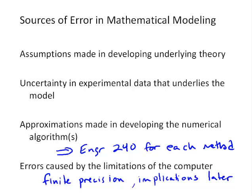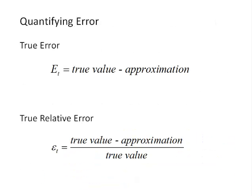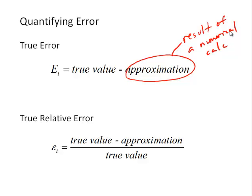So let's get to those standard definitions of error. First of all, for quantifying error, we can define the true error, e sub t, as the true value minus the approximation. So the approximation will be generally the result of a numerical calculation. Now, the true error is an important number because it tells us the number of significant digits in our result. However, it's not always that useful because the magnitude is not relative to the solution itself.